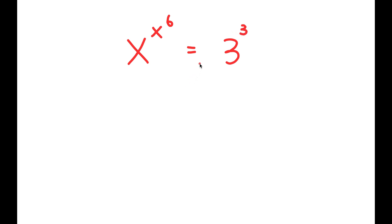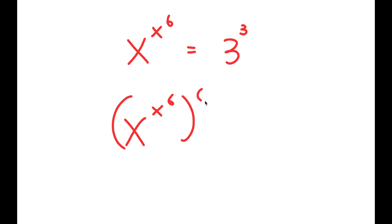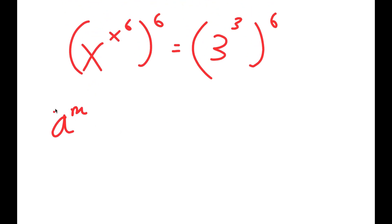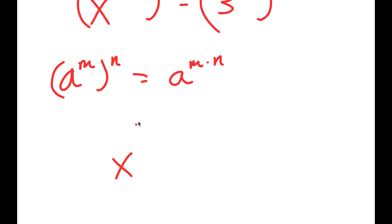To solve this, I'm going to first take the power of 6 on both sides. So I get x to the power of x to the power of 6, to the power of 6, is equal to 3 to the power of 3 to the power of 6. Now, if I have something in the form a to the power of m to the power of n, this equals a to the power of m times n. So 3 and 6 multiply, giving x to the power of 6 to the power of x to the power of 6, equal to 3 to the power of 18.